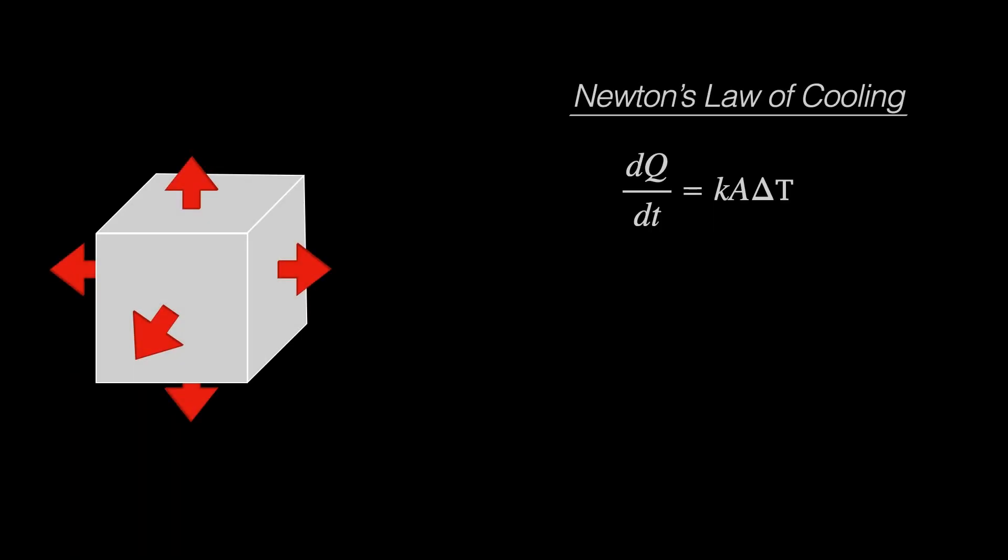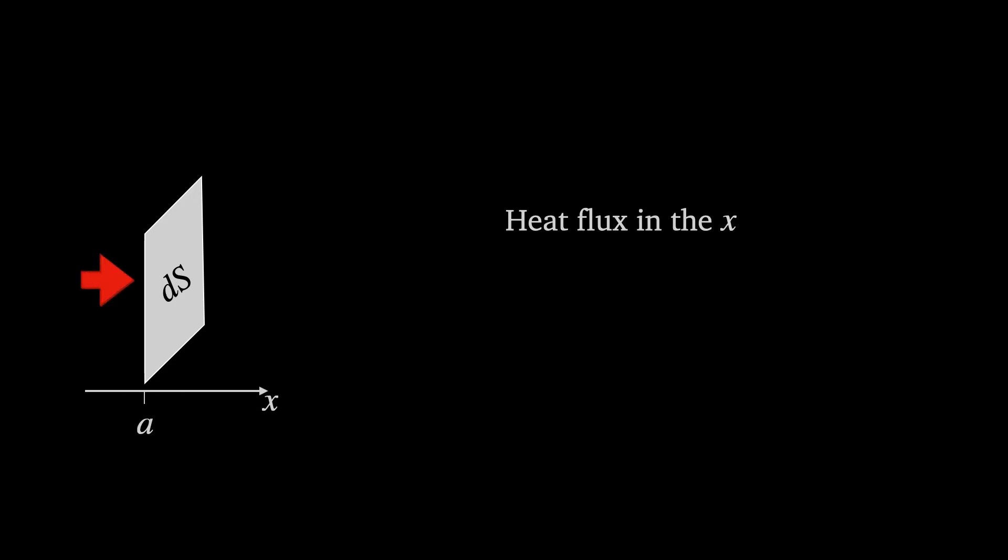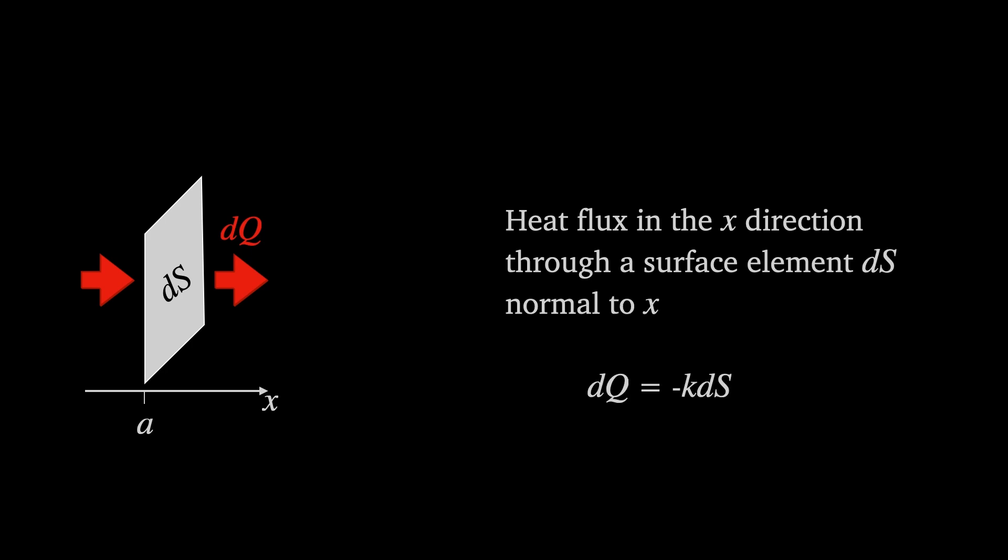Take Newton's law for instance, which tells us how heat flows across a surface area. Well, if we imagine some tiny piece of surface area dS, and suppose it's perpendicular to the x-axis and is at x equals a. Heat flow through it, dQ, is Newton's law with the area replaced by dS, and the temperature difference is the derivative of the temperature with respect to x evaluated at x equals a. This is now called Fourier's law.